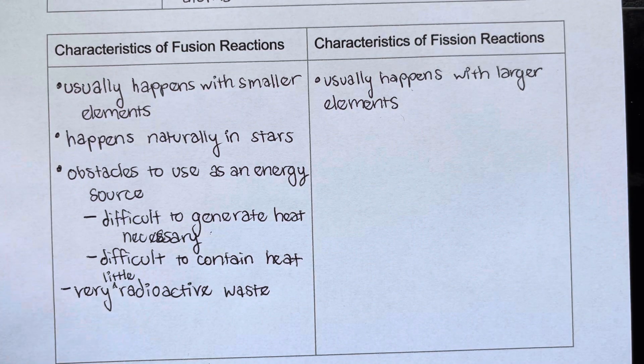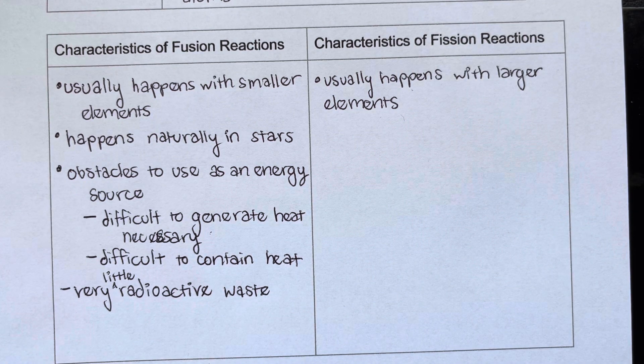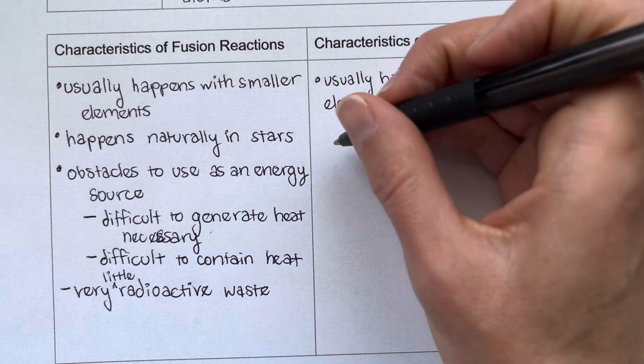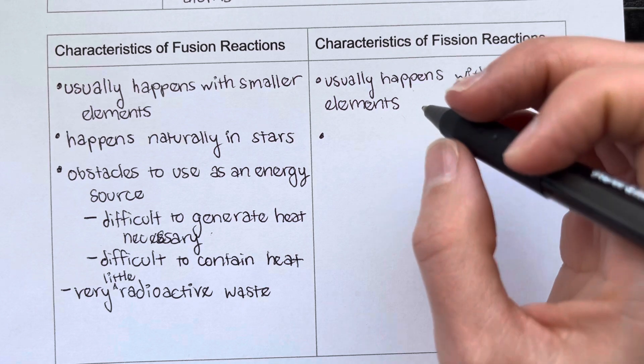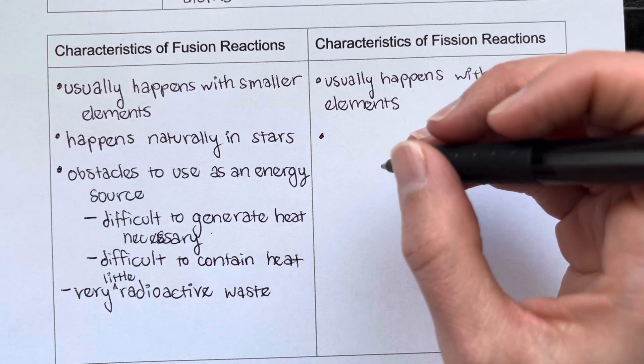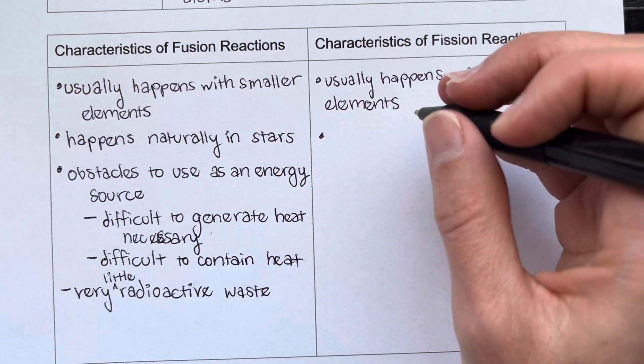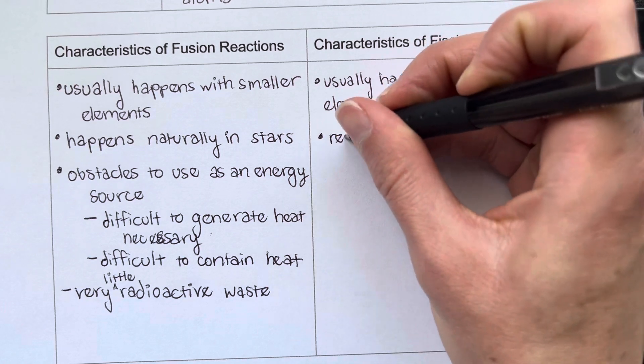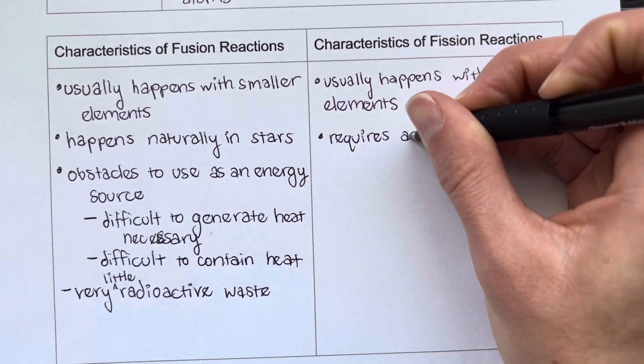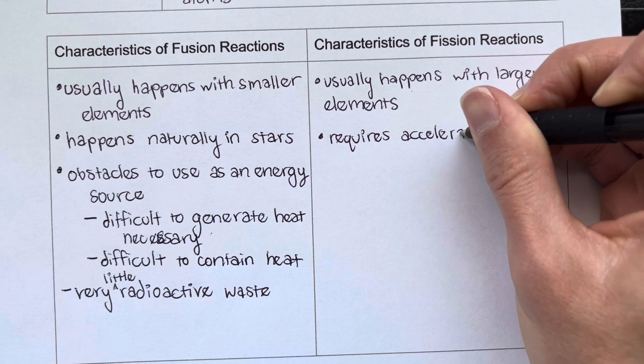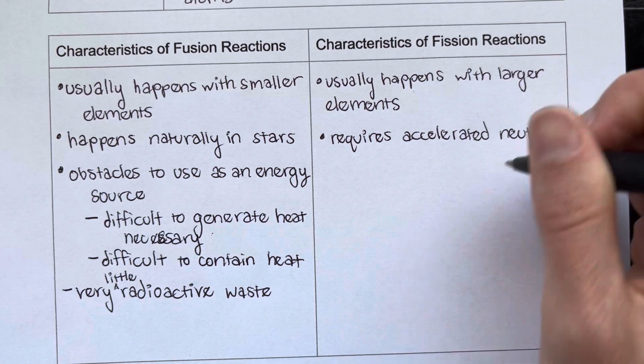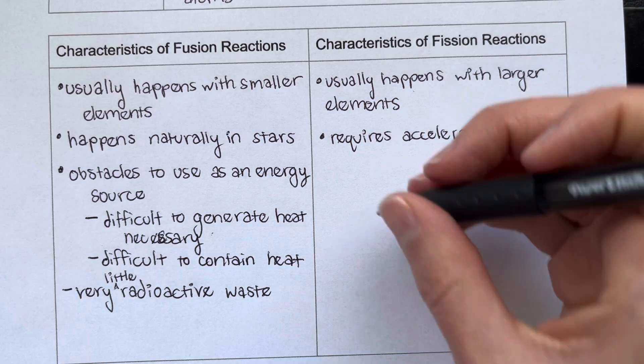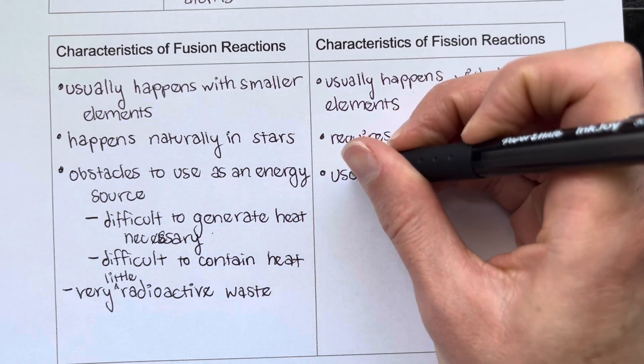And it requires an accelerated neutron to start the process. And we'll see that in the reactions that we've written symbolically down here at the bottom of the page. So it requires an accelerated neutron to start. And this one is used in nuclear weapons and power plants.